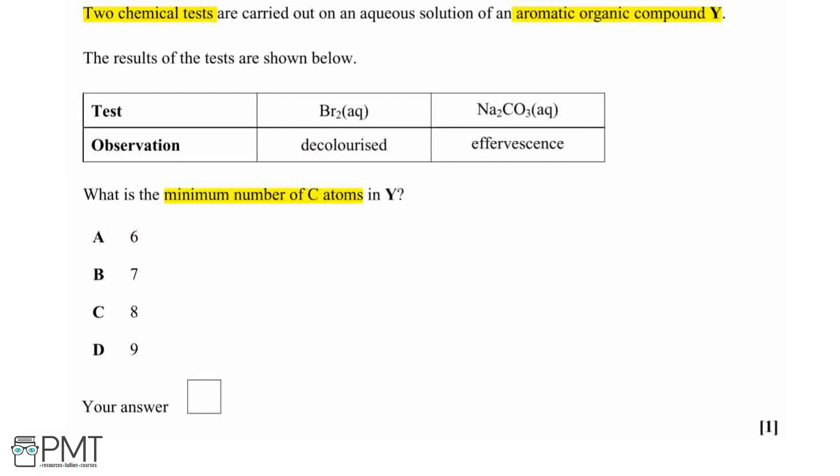So for it to be an aromatic compound, it's got to contain a benzene ring. Let's start by drawing this out for our first part of the structure overall. Now our benzene ring contains six carbon atoms to start us off.